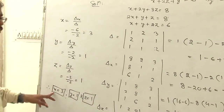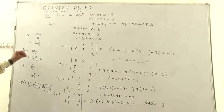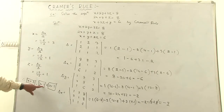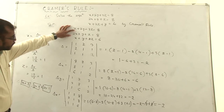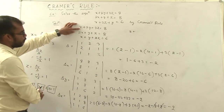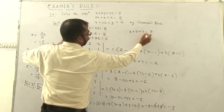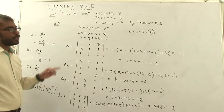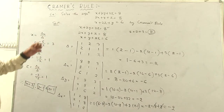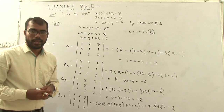So here x is equal to 3, y is equal to 1, and z is equal to 1 — these are the three values we have found. Now we check: putting x equal to 3, y equal to 1, z equal to 1 into the first equation: 3 plus 2 into 1 plus 3 into 1 equals 3 plus 2 plus 3 equals 8 — correct. This is Cramer's rule and how to apply Cramer's rule. Have a nice day, thank you.